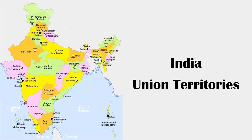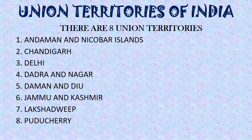Now we can see the Union Territories of our country. Union Territories are the territories governed directly by the Central Government. It is directly governed by the Central Government. Shall we study the Union Territories now? You can open your book to page number 116 - Union Territories of India. There are 8 Union Territories.